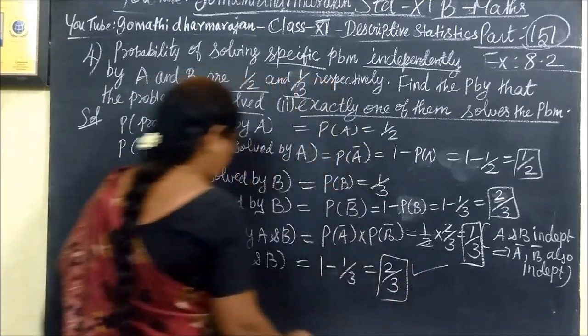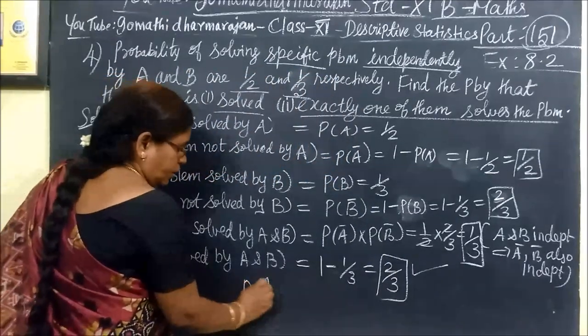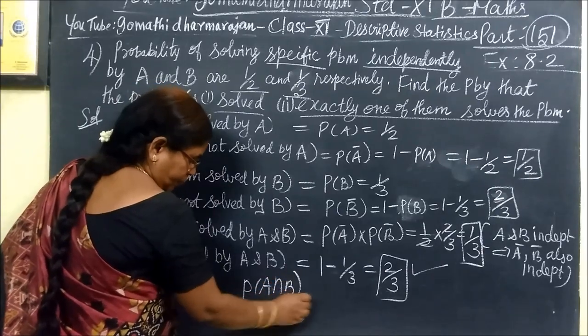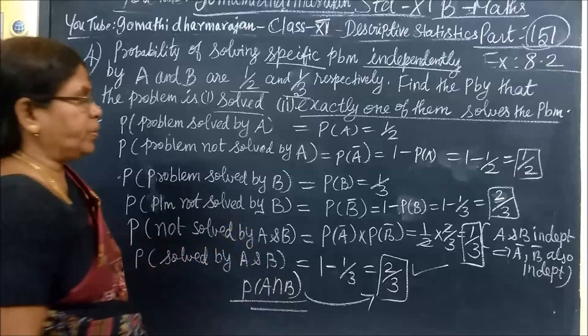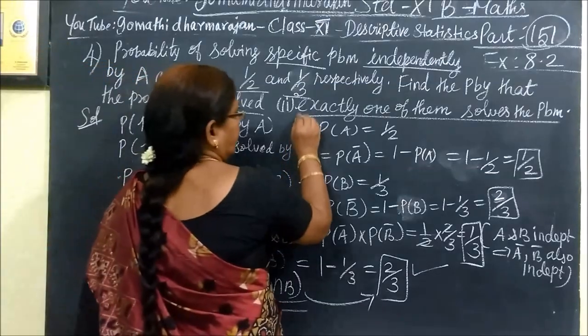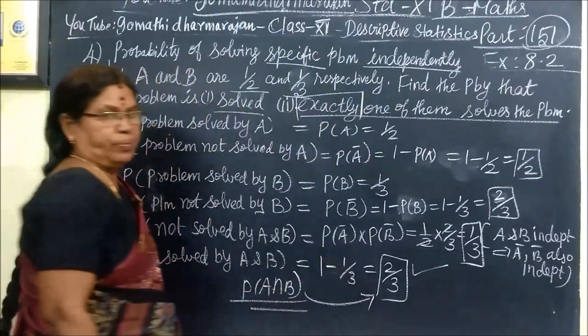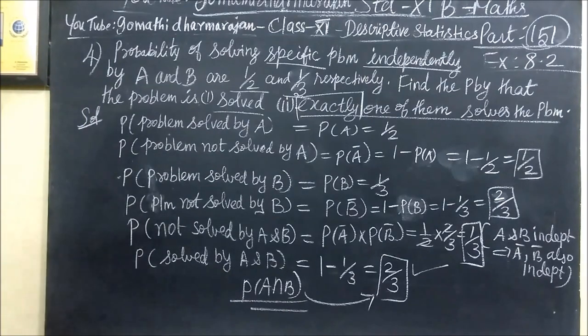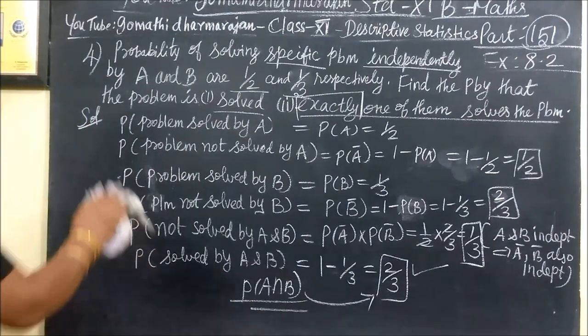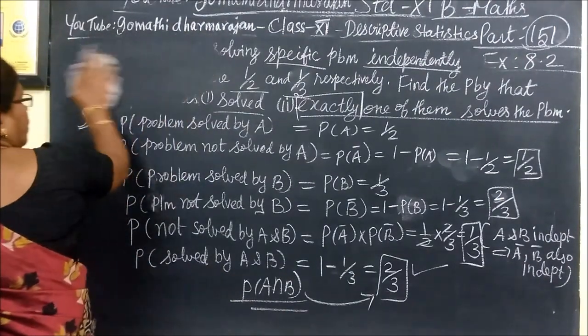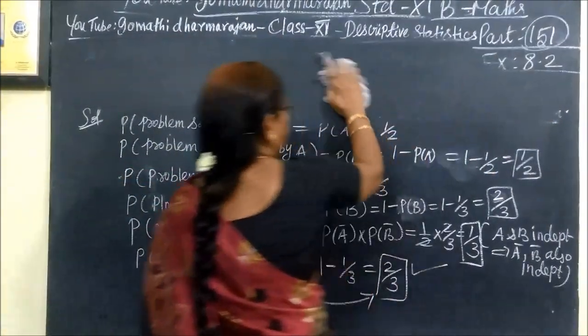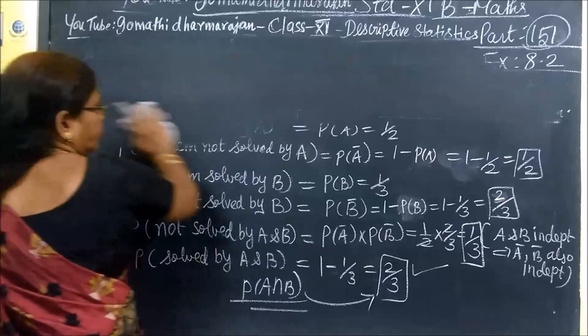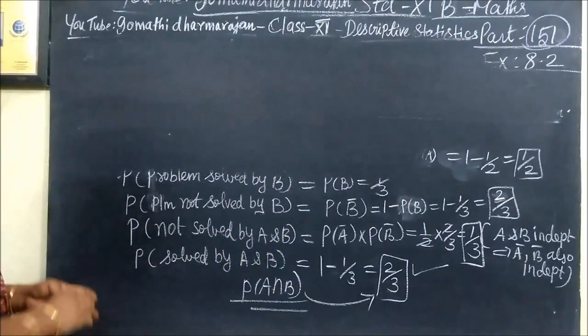So 1 minus 1/3 equals 2/3. So 2 minus 1 to 1/4. If this is equal to 2/4, it is divided here and also it does not solve. So that's it. Here we are writing.